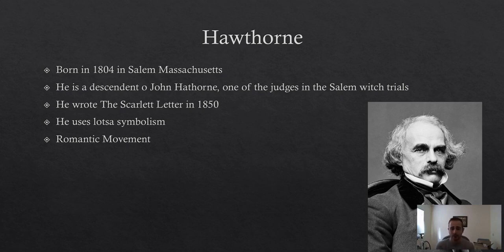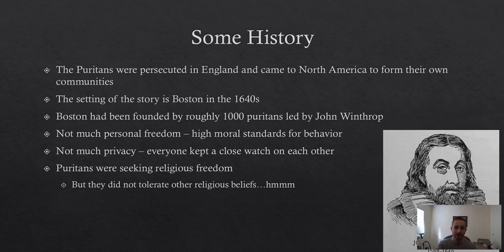There's a lot of symbolism in this story — it starts right off the bat with the rose outside the prison door. This book, like Frankenstein, was also written during the Romantic Movement. You'll notice lots of intense emotions felt by the different characters and a big emphasis on nature. There are a couple of big scenes that happen in the woods that I think you'll find are very key to the story and enjoyable to read.